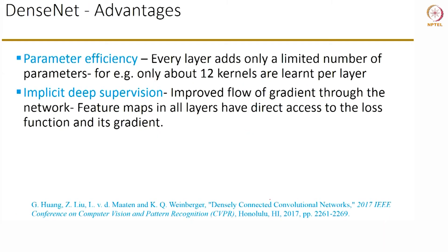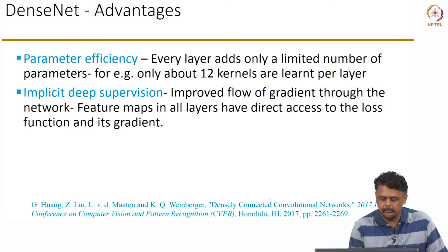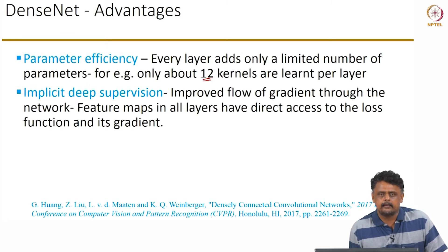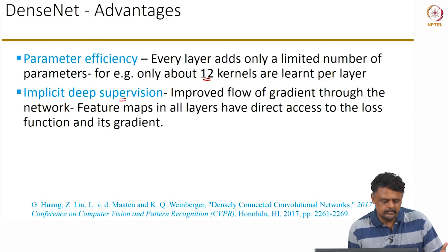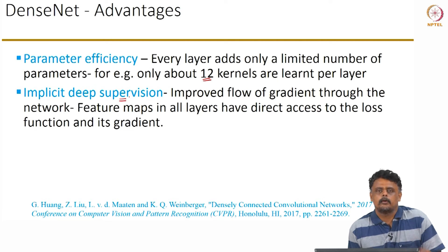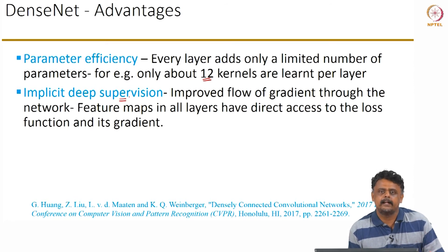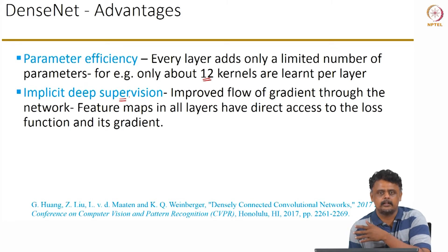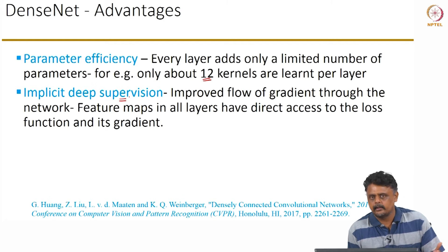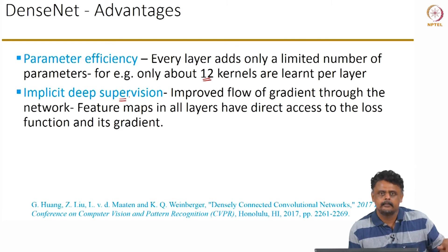The following advantages are proposed by the authors for DenseNets. First, parameter efficiency: by fixing the number of output feature maps per layer, only very few kernels are learned per layer — for example, about 12 kernels in one suggested architecture, and 24 or 32 in others. They also discuss implicit deep supervision: in Inception, auxiliary cost functions used feature maps from intermediate layers to make learned features more discriminative. Other approaches feed intermediate feature maps to an SVM for classification and backpropagate that error.